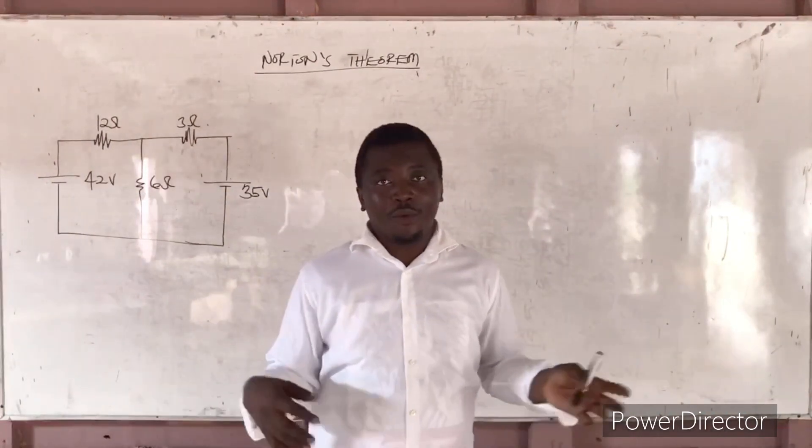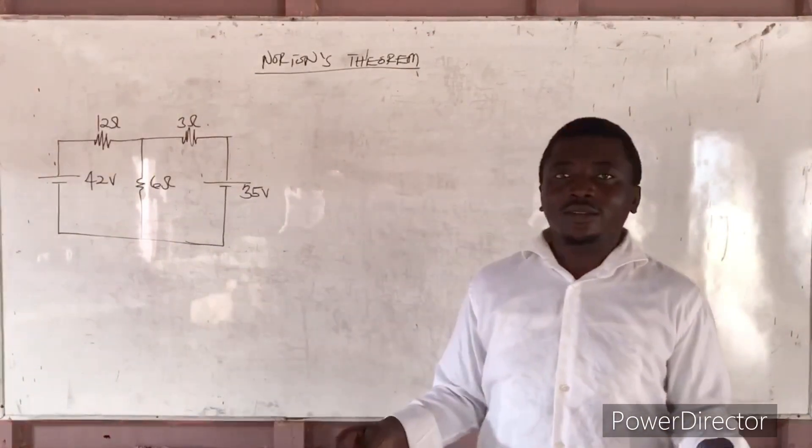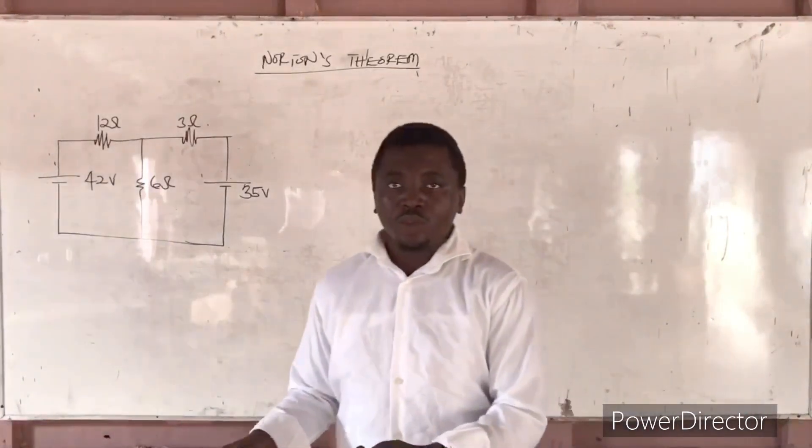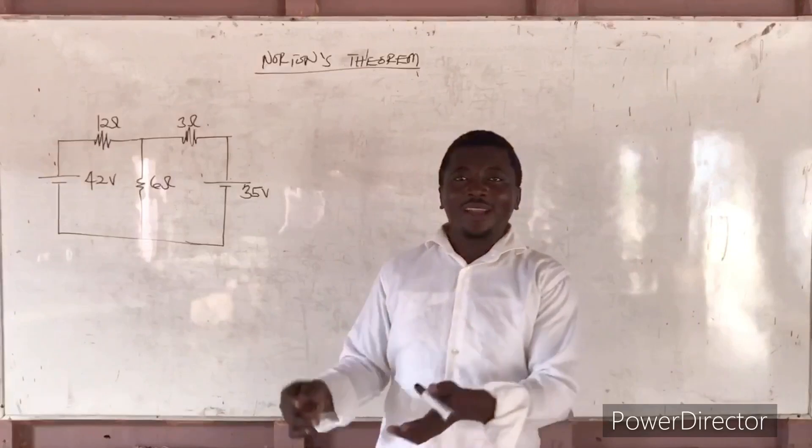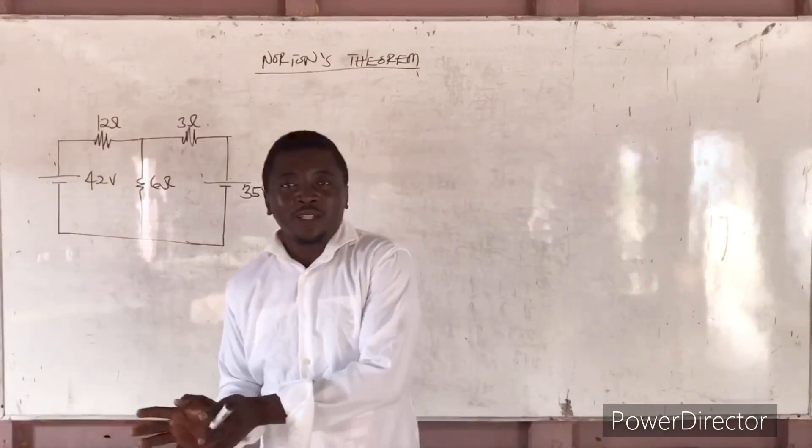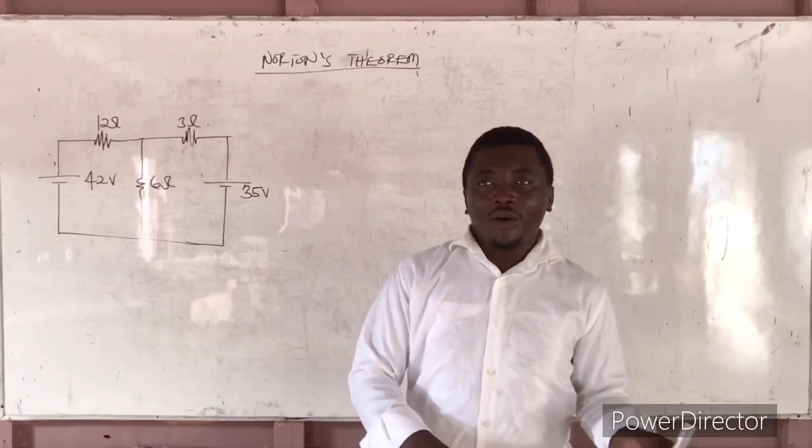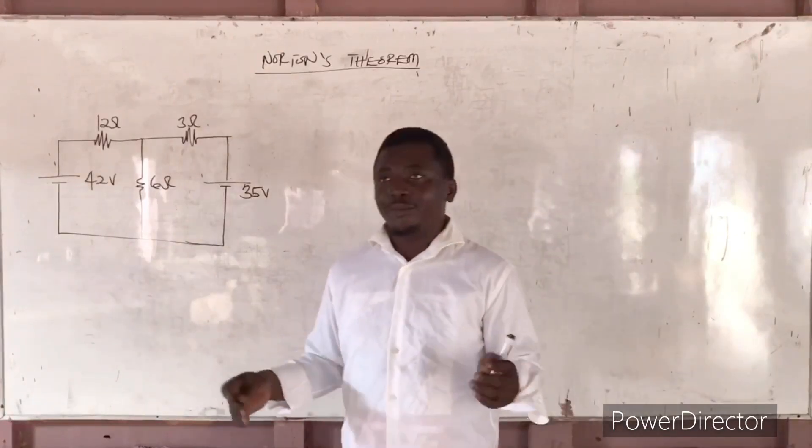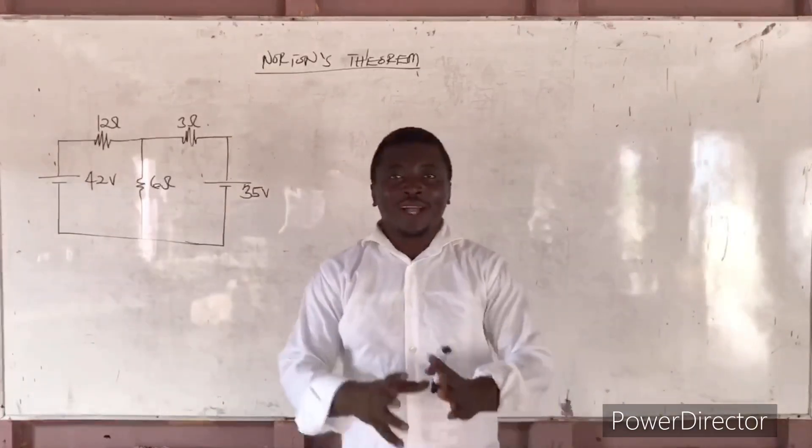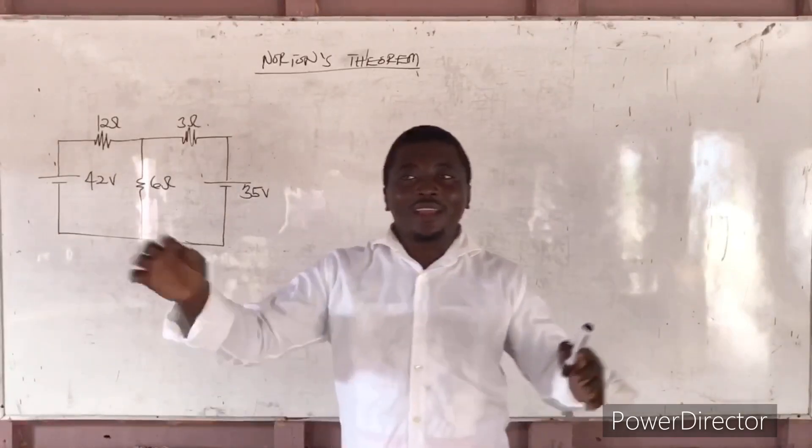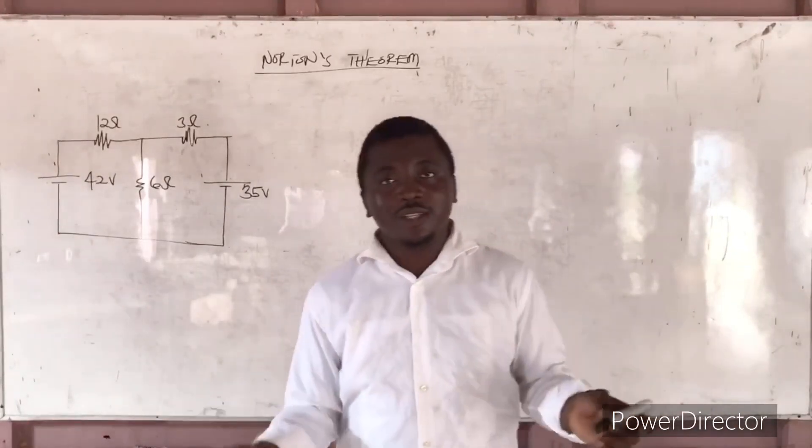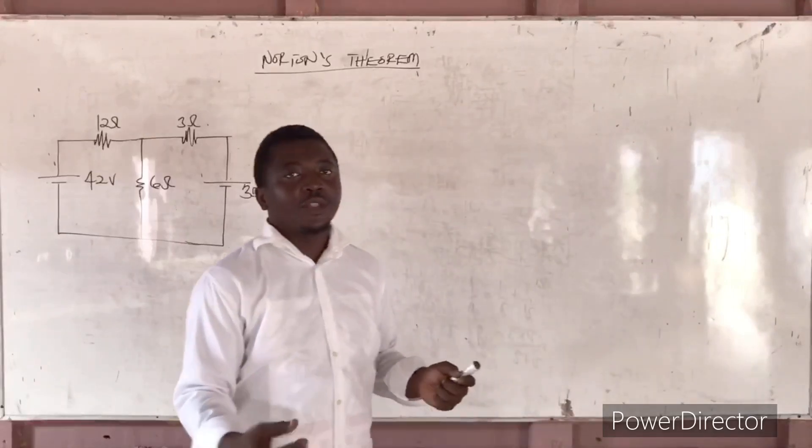we don't require. So Kevin Norton did their theory so that they can help us find maybe the voltage across a particular resistor, the current across a particular resistor or any other thing, but you won't have to tackle the whole circuit and find the other current that you don't need. That's why they brought this theory.